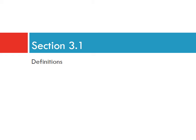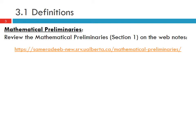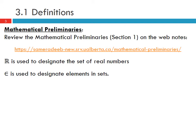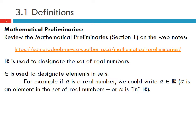Let's talk about some definitions. As we go through this section and later into the course we're going to be using some notation that comes from math courses you've probably seen before. You should review the mathematical preliminaries in section 1 of the web notes to refresh your memory on some of this notation. This symbol is used to designate the set of real numbers, and this symbol designates an element in the set. So for example if a is a real number then we can write a ∈ ℝ.